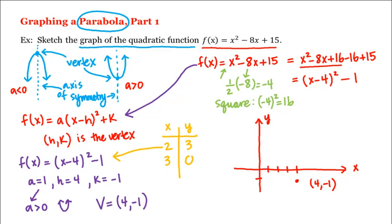So when x is 3, y will be 0. And when x is equal to 5, we have 5 - 4 is 1, 1 squared is 1, and 1 - 1 is 0. And then when x is equal to 6, we have 6 - 4 which is 2, 2 squared is 4, and 4 - 1 is 3.